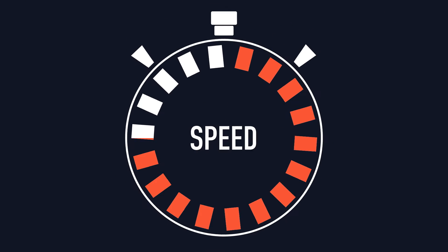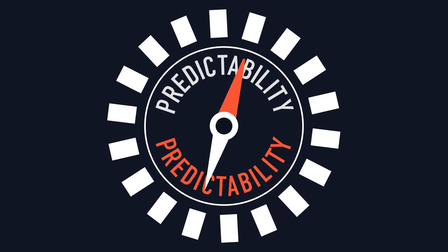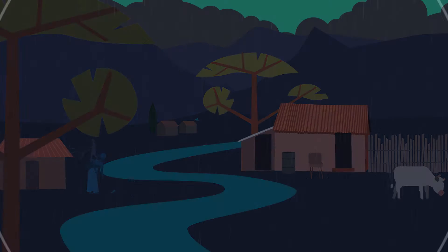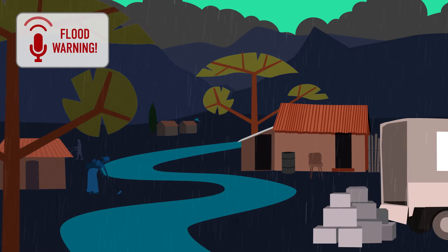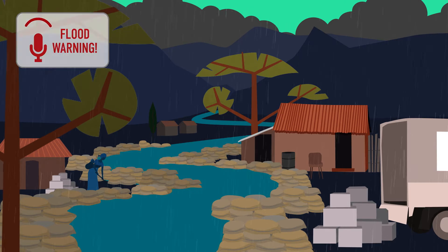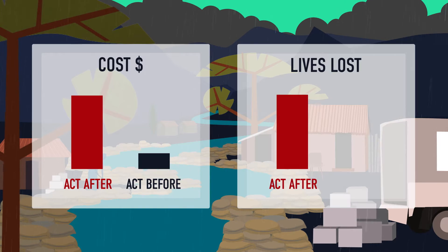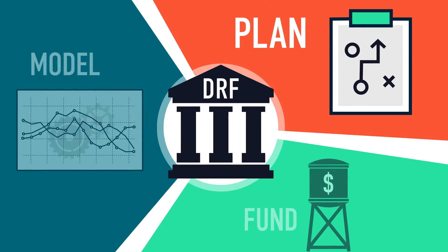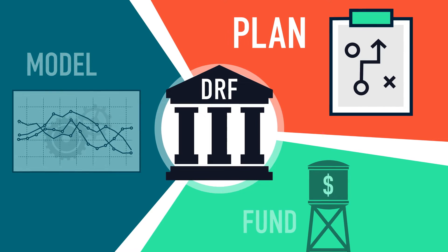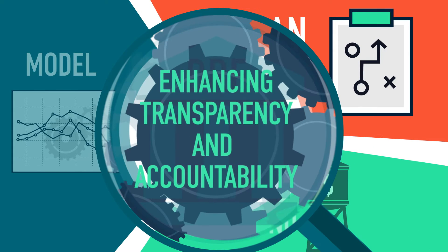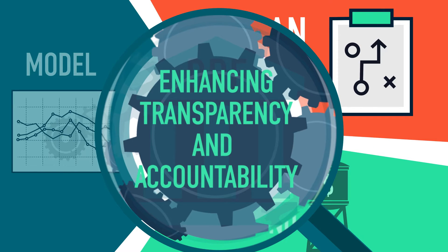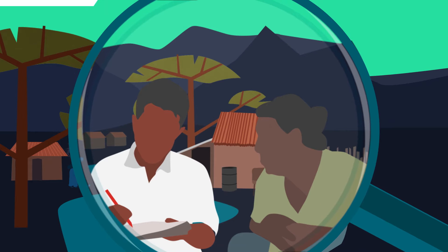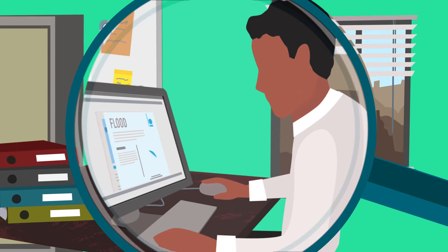Using DRF increases the efficiency, speed and predictability of crisis management and allows humanitarians to act before risks turn into crises, reducing costs and the lives lost in any disaster. DRF requires actions to be planned and designed before the worst happens, so it has the added benefit of enhancing transparency and accountability — both downstream towards the people at risk and upstream towards the donors.